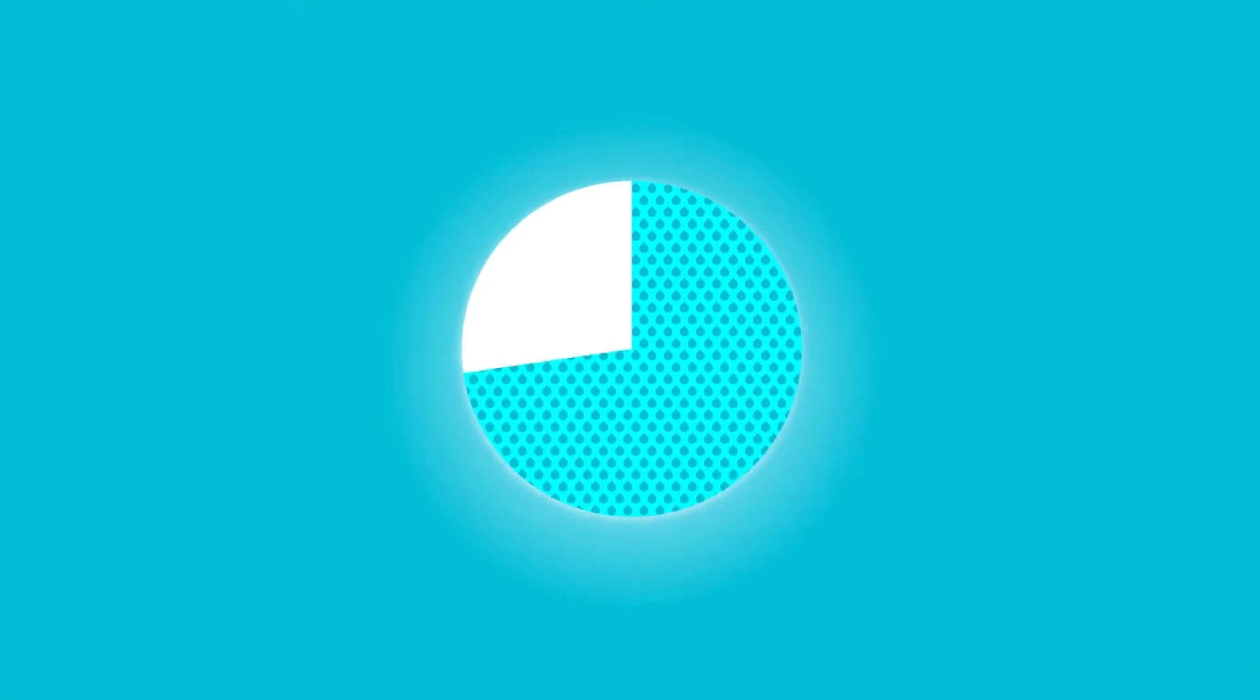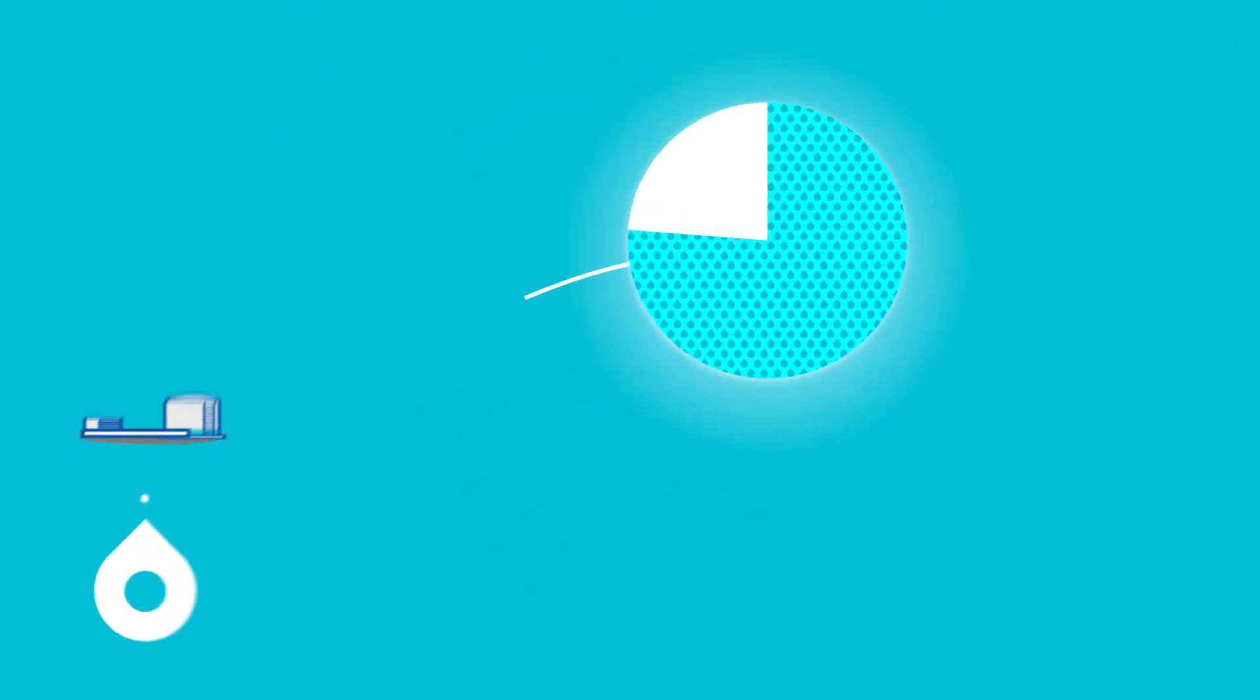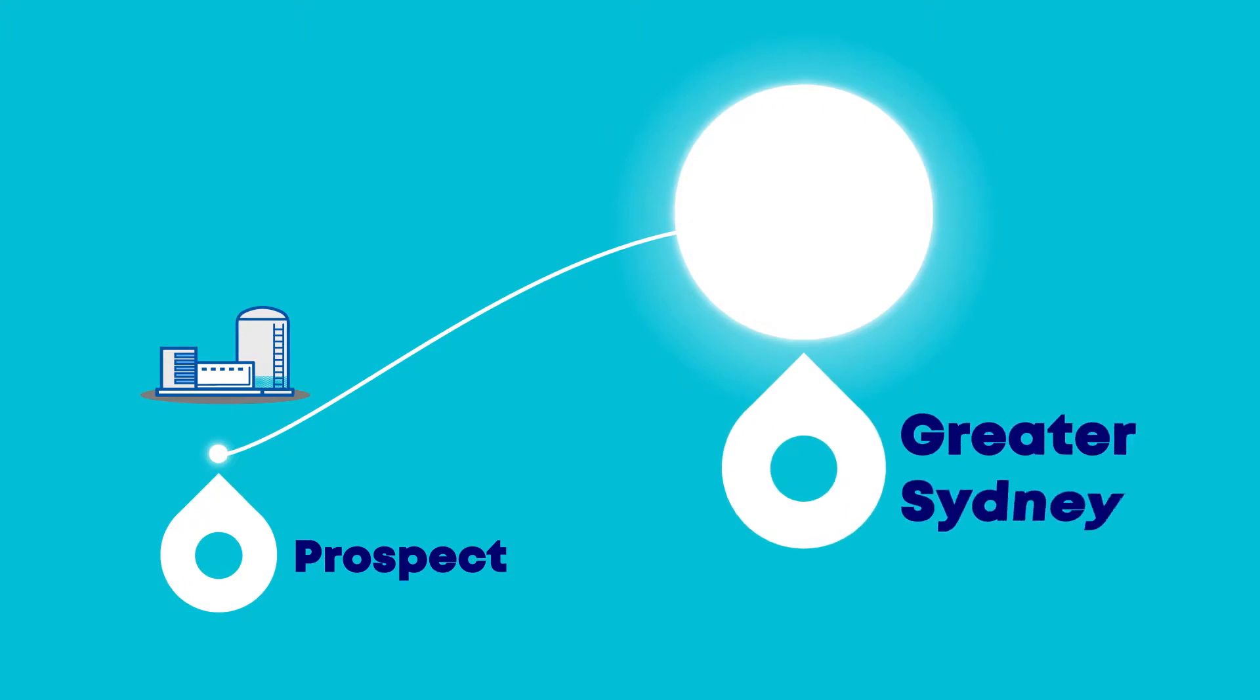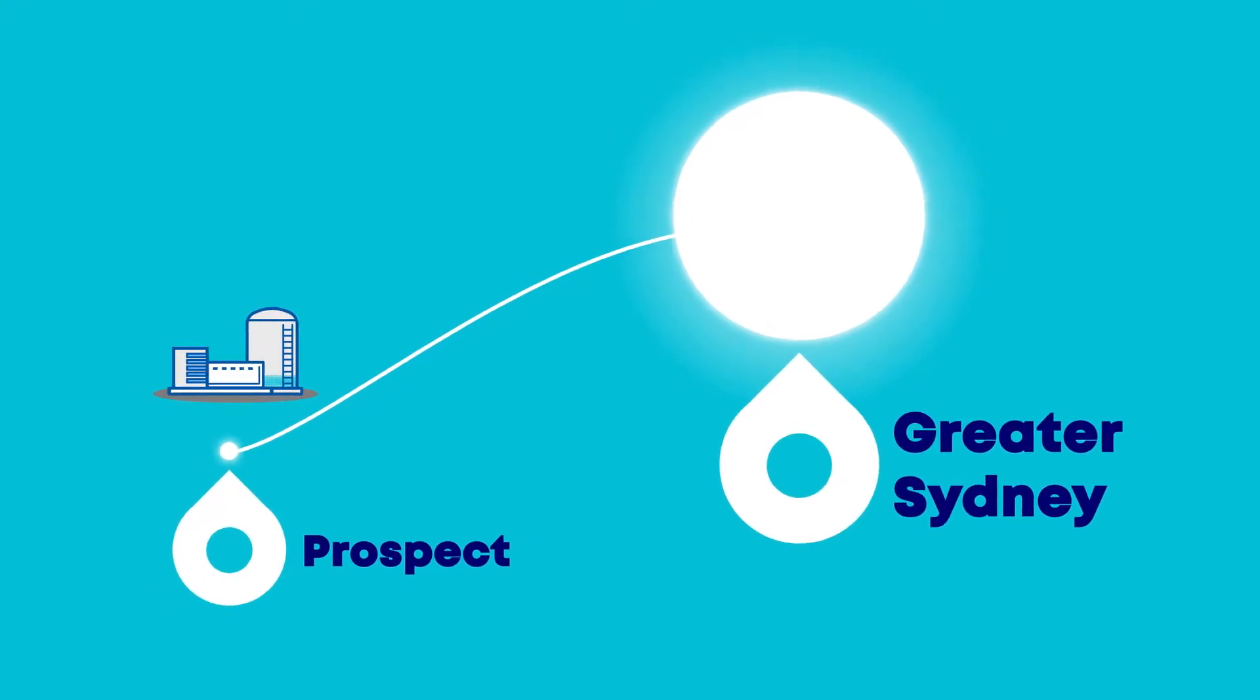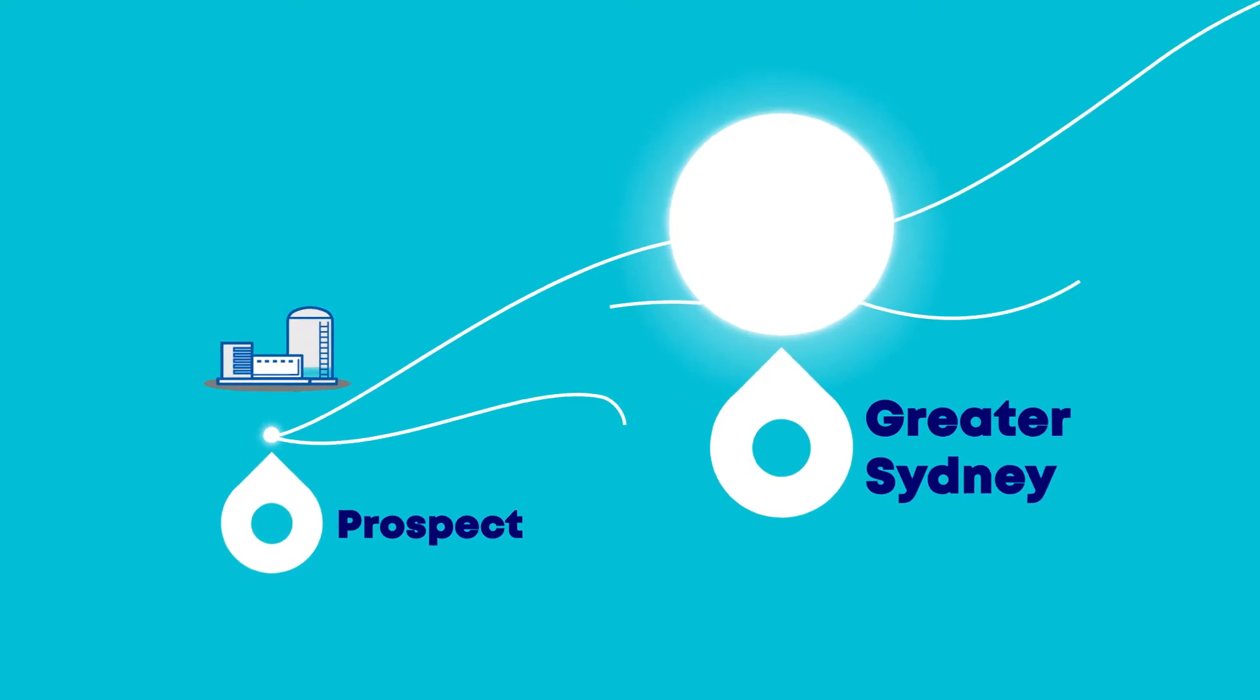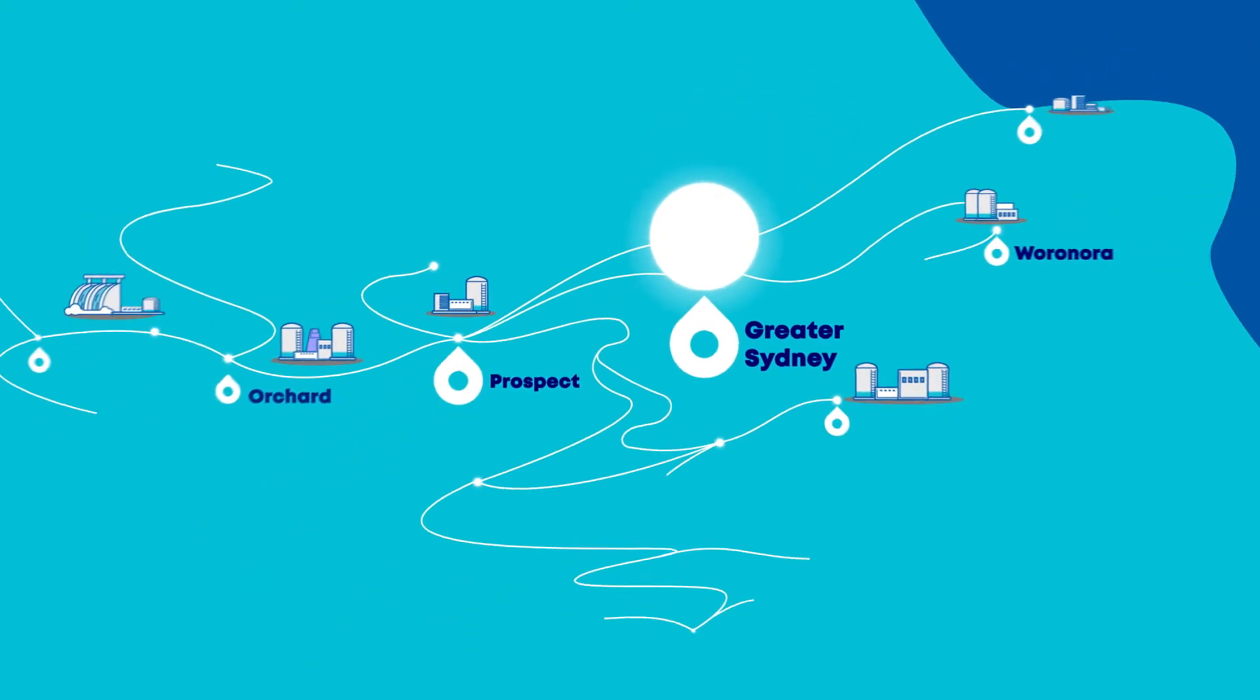In Sydney, around 80% of our drinking water comes from the Prospect Water Filtration Plant, which sources water supplied by Water NSW from nearby lakes and rivers. Other areas of Sydney are supplied by a series of smaller plants.